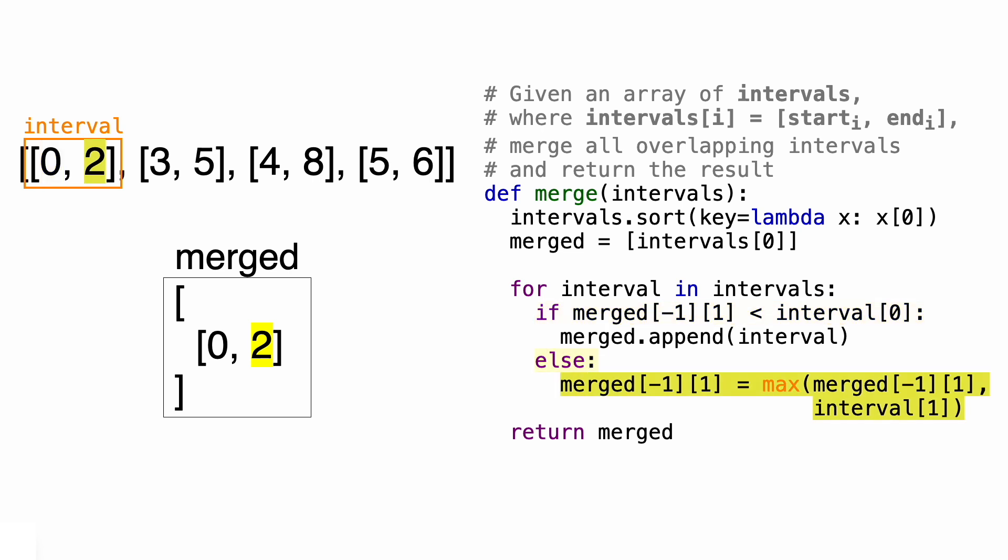This is where we're going to compare the ending values of both intervals, take the maximum, and make that the new ending value of our first interval. So right now, both ending values are 2, so this ending value stays at 2, and we just move on to the next interval.